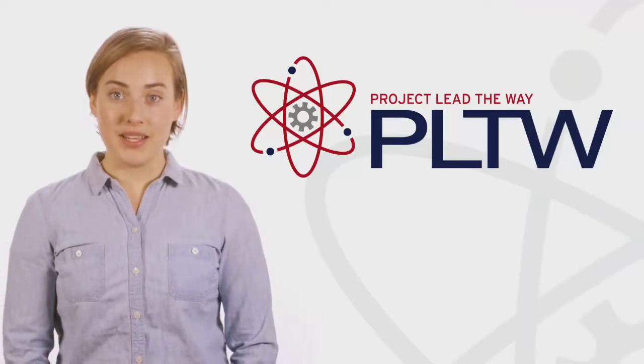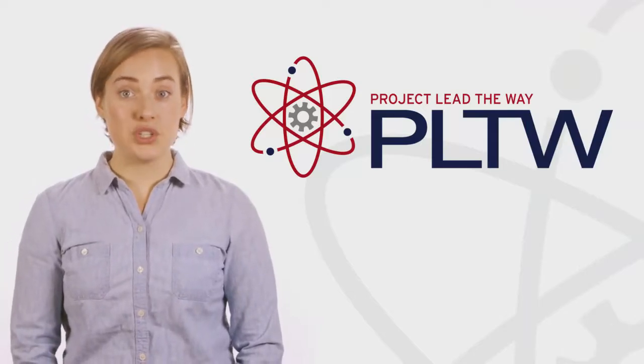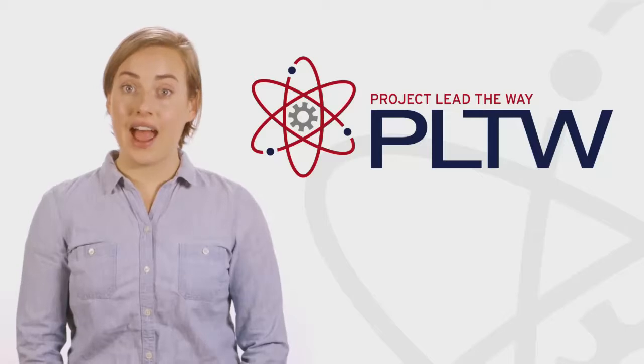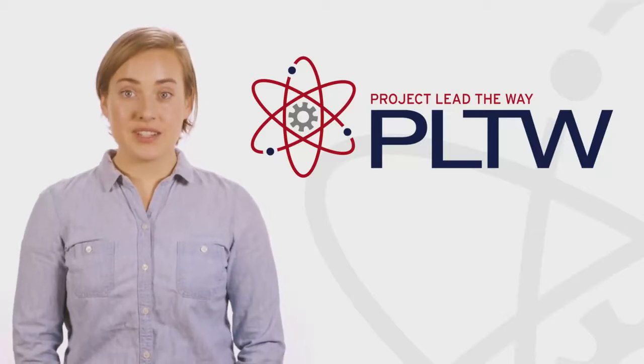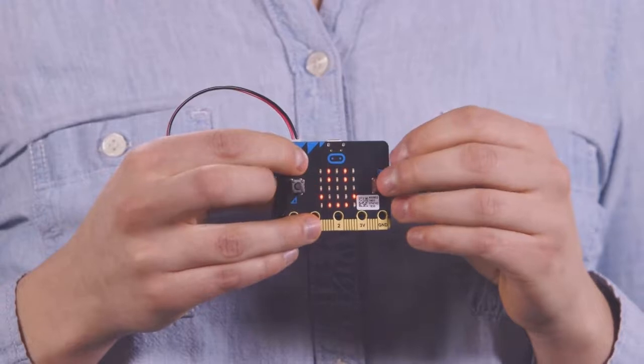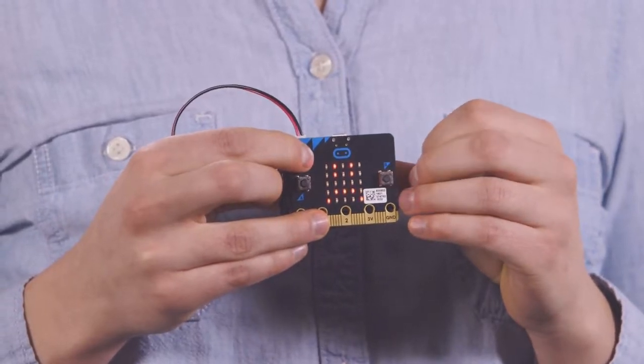The micro:bit has input components built onto the microcontroller which you can use to trigger events or actions in your programs. For example, you can press button A or B to show different faces on the LED grid.